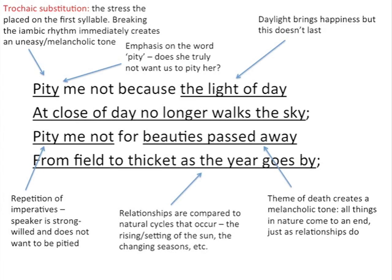So she says 'pity me not because the light of day at close of day no longer walks the sky.' Here she's talking about how daylight brings happiness, but that doesn't last. This is the start of a whole list of references to different natural cycles — the light of day, 'beauties passed away from field to thicket as the year goes by.' All the way through she's comparing relationships to natural cycles like the rising and setting of the sun and the changing of seasons. We've also got the theme of death here, which creates a melancholic tone, suggesting that all things in nature come to an end just as relationships do.